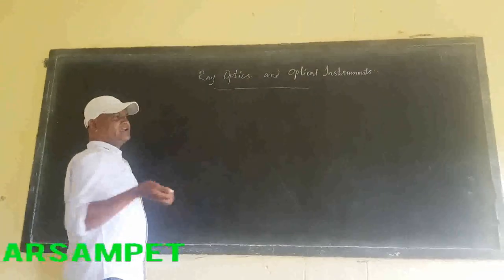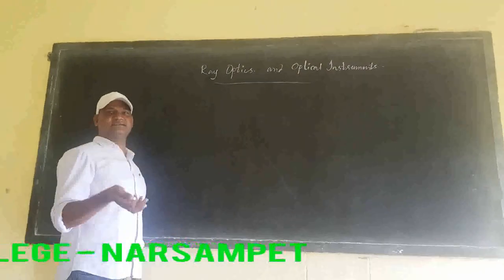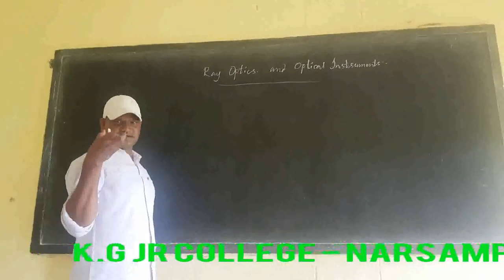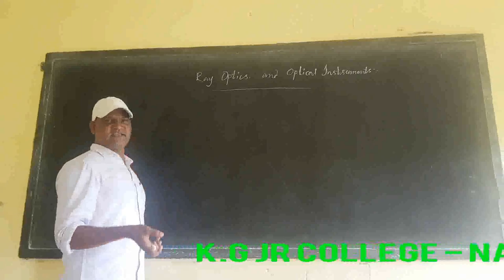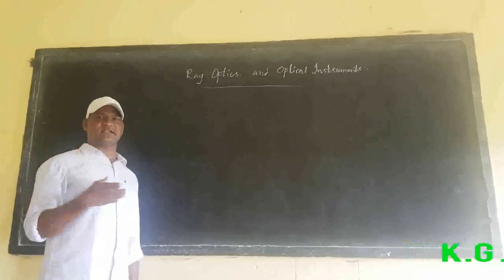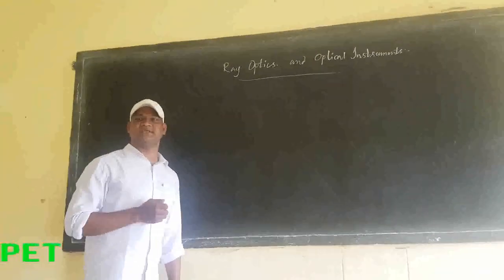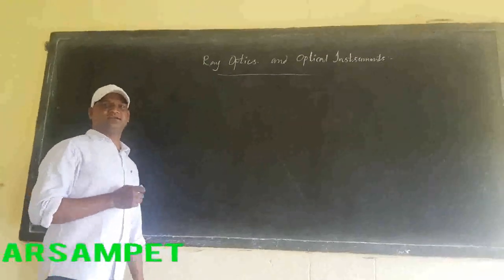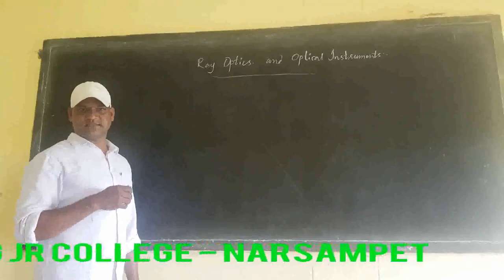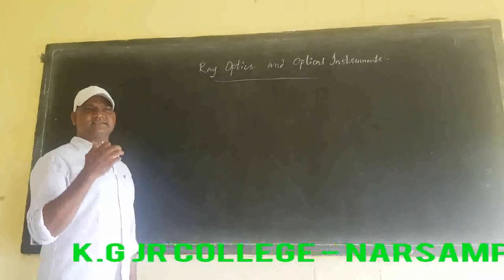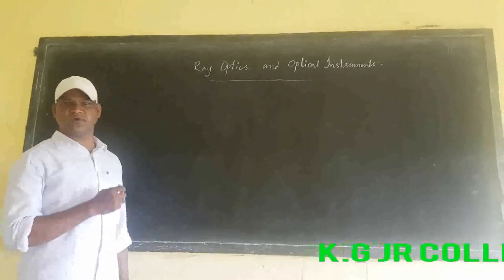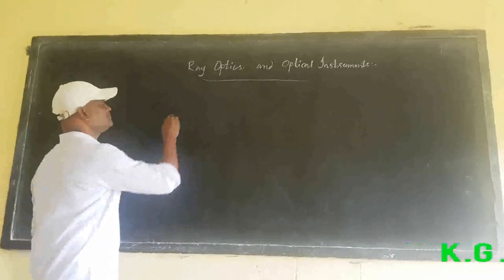Our sense organs are ears, eyes, nose, and skin, which are meant to give us information about our surroundings. The sense associated with the eyes is known as vision.